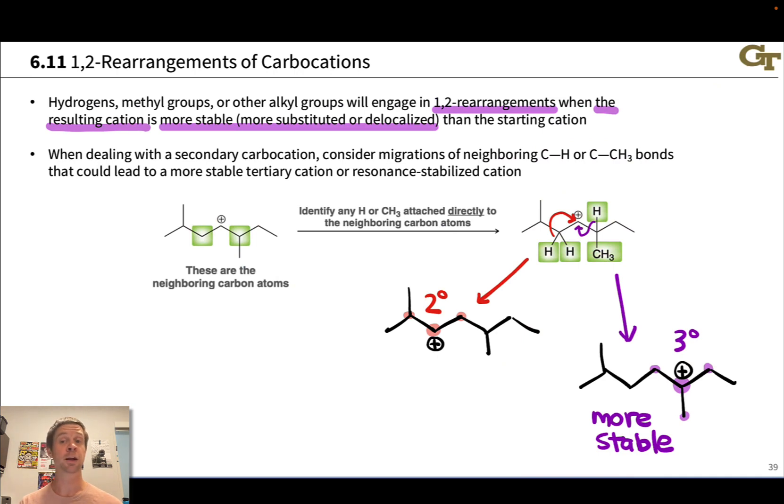But the secondary to tertiary rearrangement here in purple does have a big thermodynamic impetus because this cation is more stable than the starting cation. And so this rearrangement will occur very rapidly because it's fully intramolecular, happening inside one molecule, and it leads from a less stable to a more stable product.